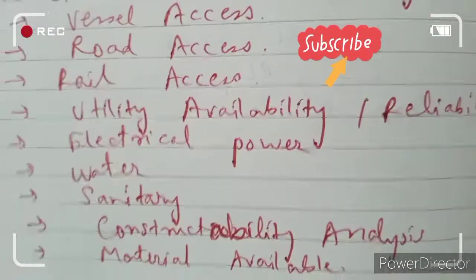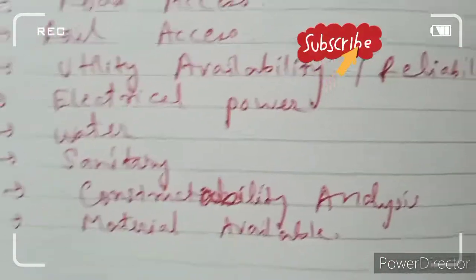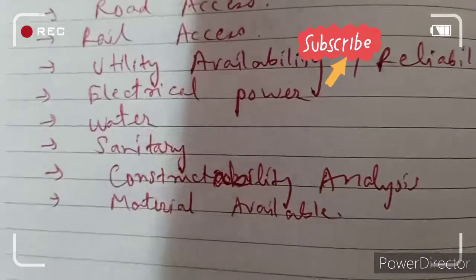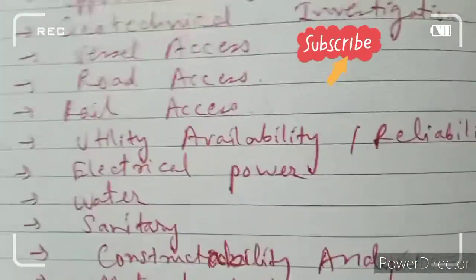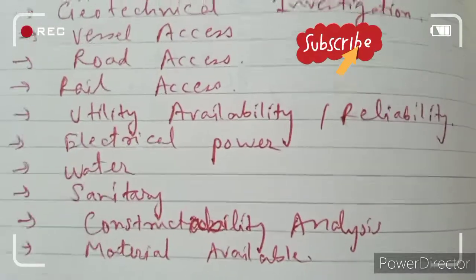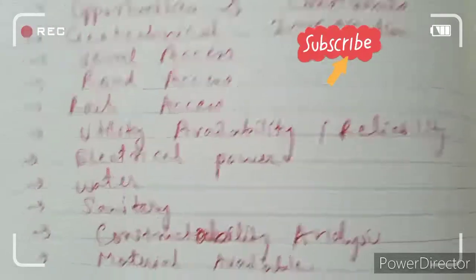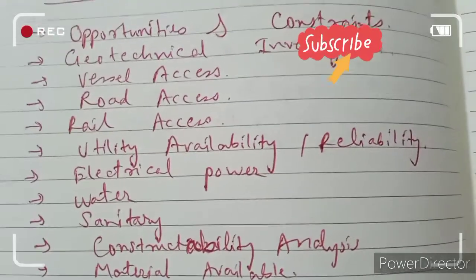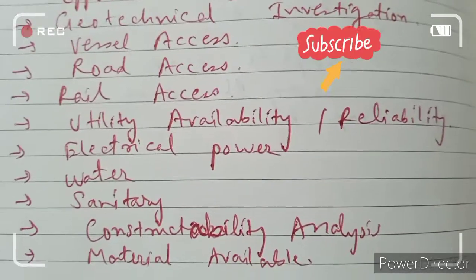The last two factors are constructability analysis and availability of materials. The construction analysis of the new port is a major factor prior to development. If materials are easily available for construction, that is an advantage; if there are constraints in getting raw materials to the port site, it will significantly affect new seaport development.